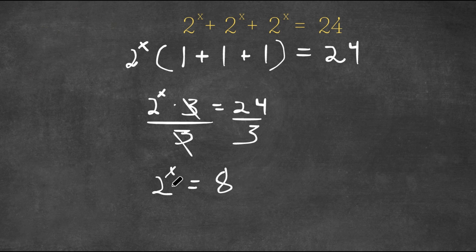So this is simply asking 2 to the power of what is equal to 8, and that's simply 3. 2 to the power of 3 is equal to 8, meaning x is equal to 3.